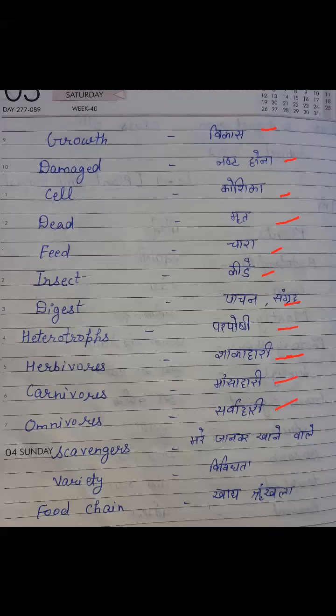Scavengers, S-C-A-V-E-N-G-E-R-S. Scavengers means marey janwar khaane wale. Variety, V-A-R-I-E-T-Y. Variety means vividhata. Last is food chain, F-O-O-D C-H-A-I-N. Food chain means khadya srankhla.